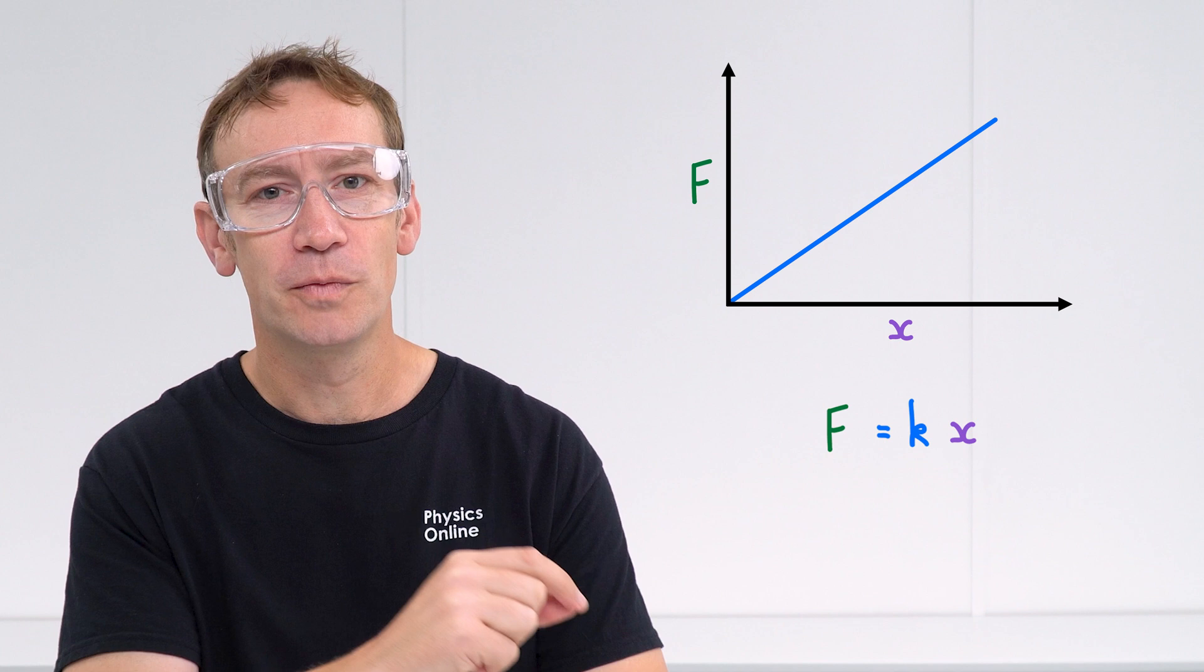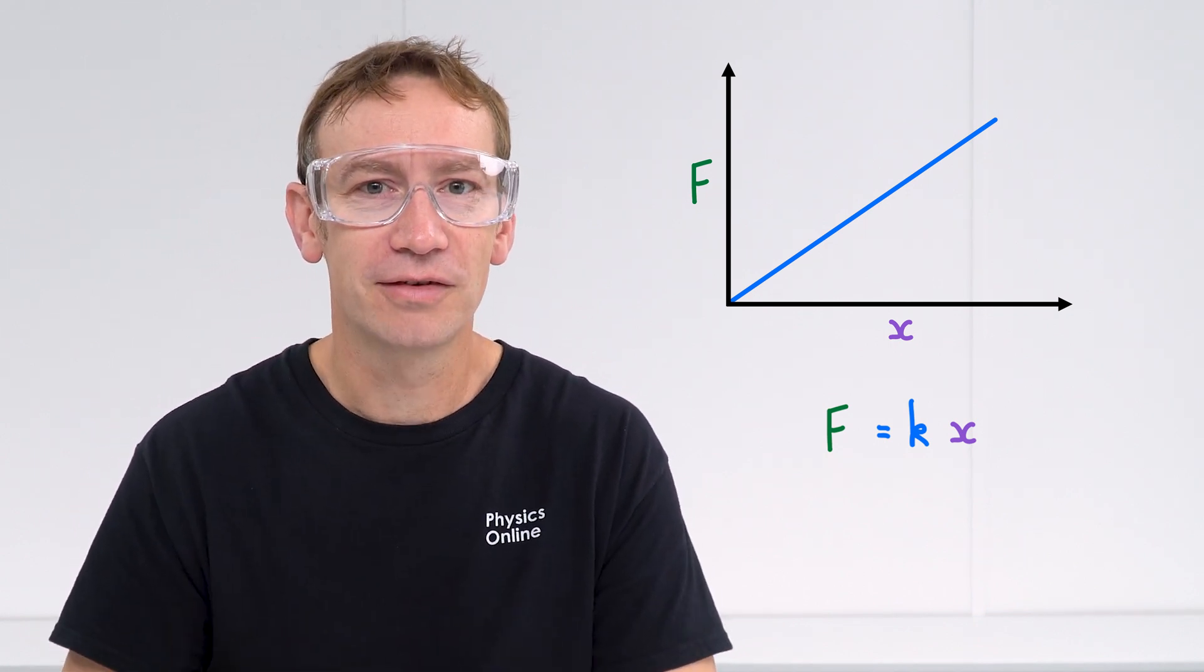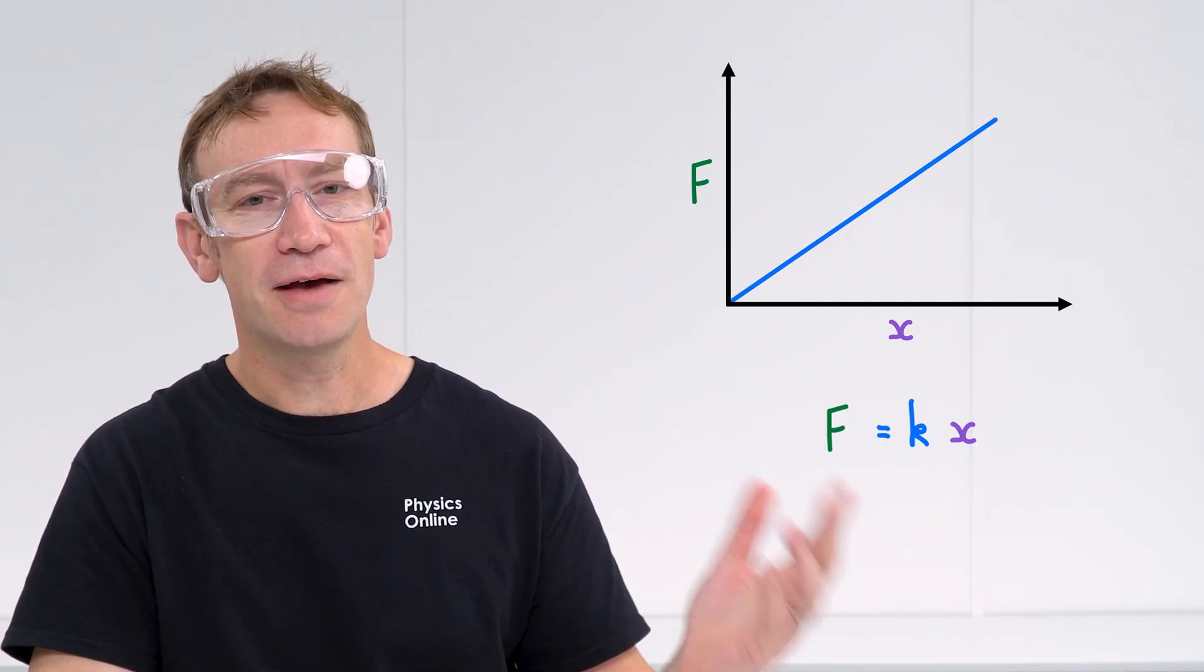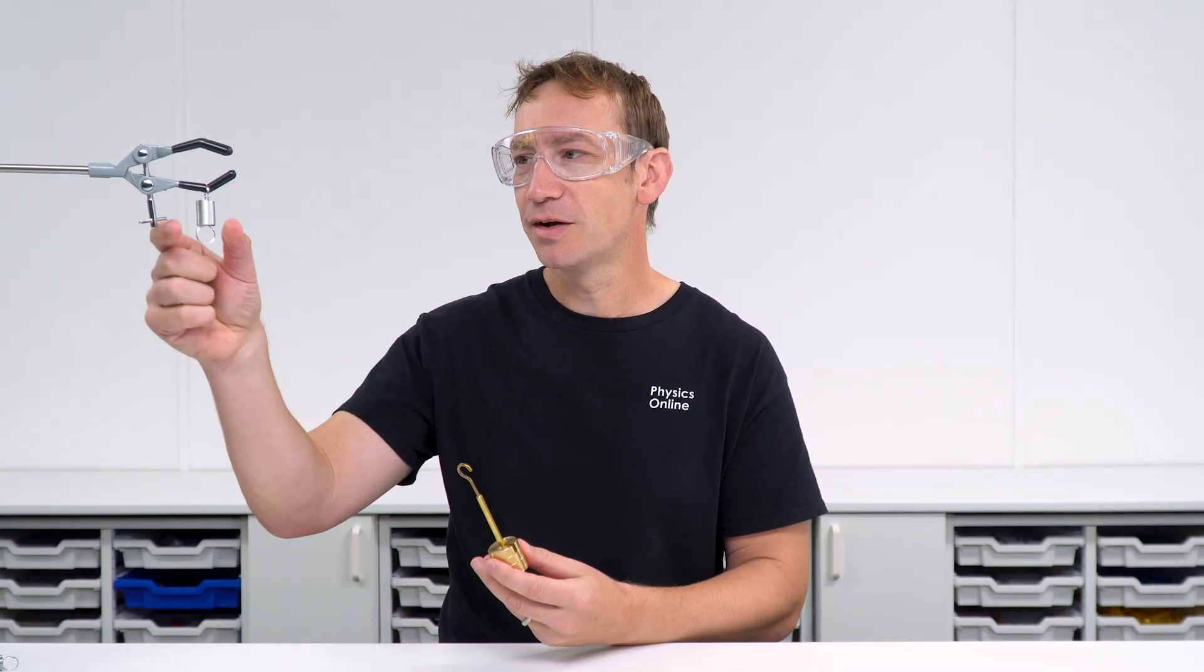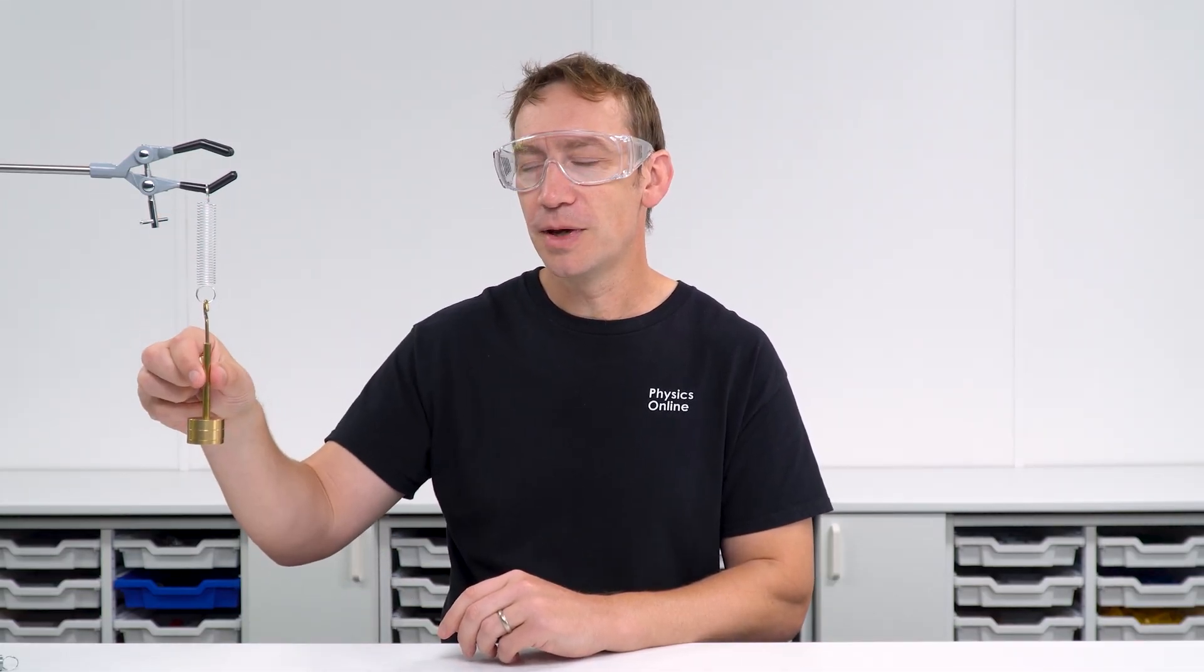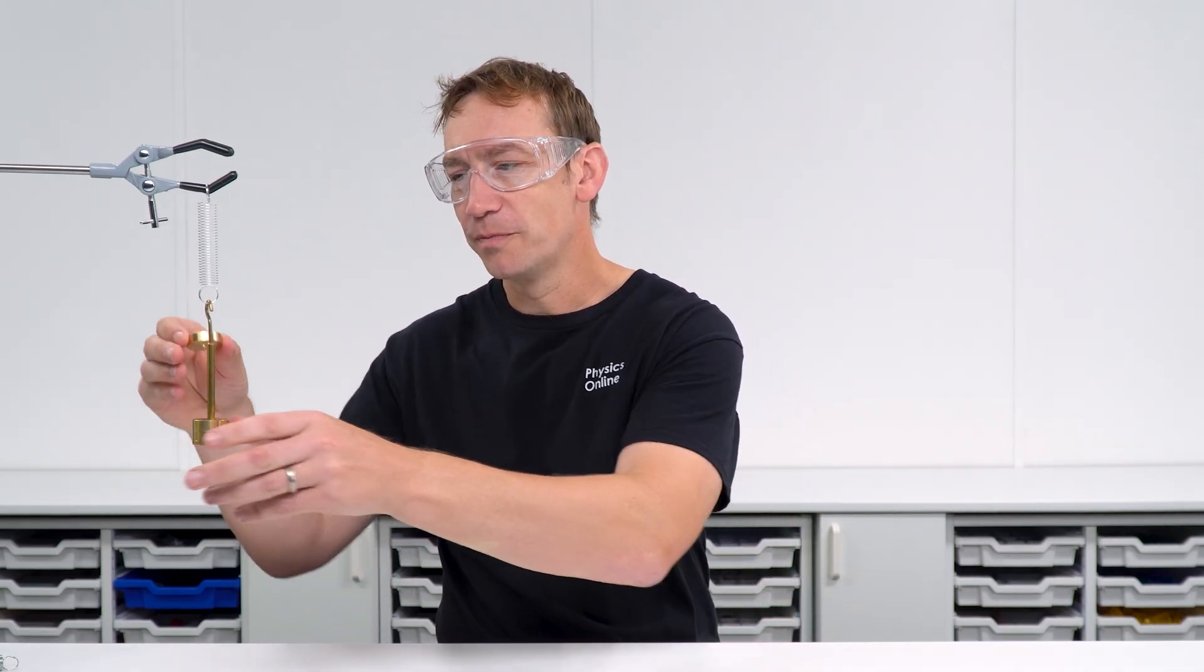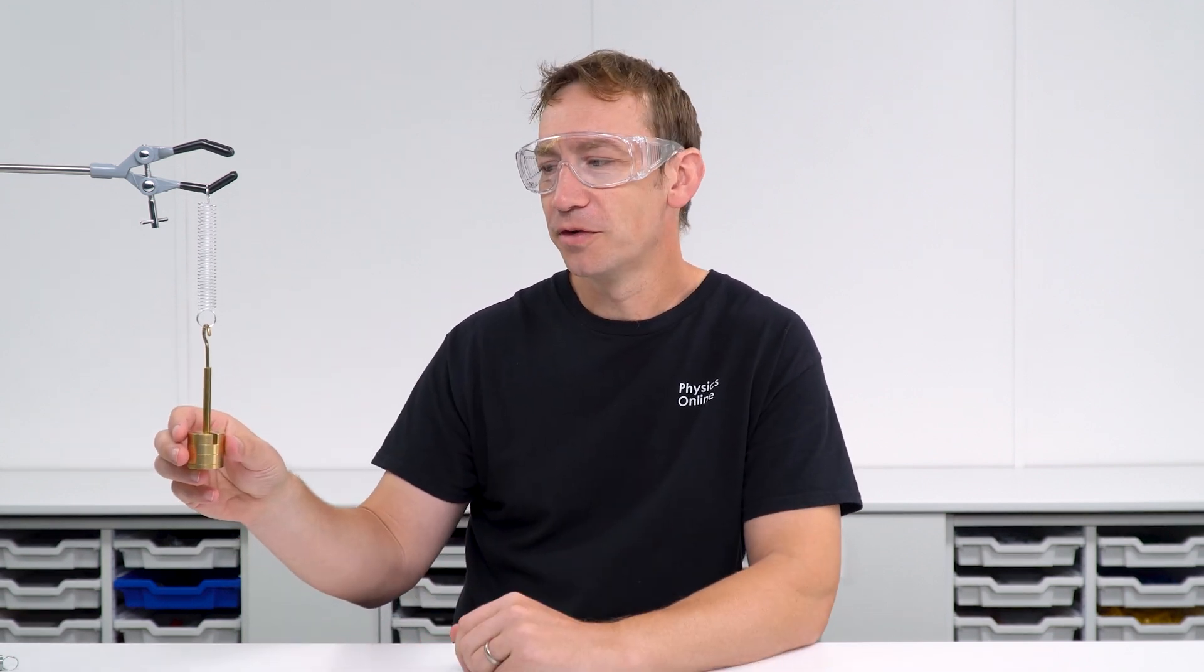If we were to plot a graph with force on the y-axis and the extension on the x-axis, that means the gradient then would be F over X, which in this case is going to be the spring constant. So what we can do is we can have a look at this spring, we can record the length of it, and then we can start adding masses onto it. The force that's being applied is going to be equal to the weight of the masses underneath, and we can find that by recording the mass of each one, multiplying by g to get the weight and therefore the force that's being applied to it.